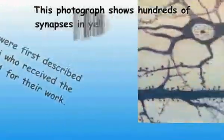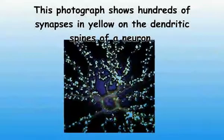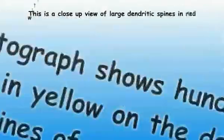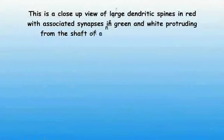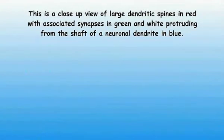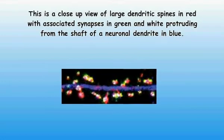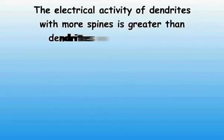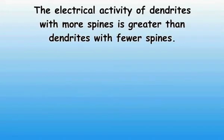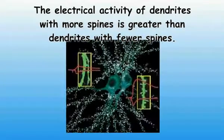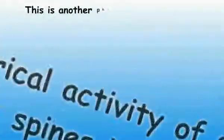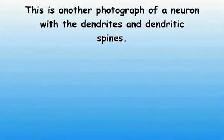Dendritic spines were first described by Cajal and Golgi, who received the Nobel Prize in 1901 for their work. This photograph shows hundreds of synapses in yellow on the dendritic spines of a neuron. This is a close-up view of large dendritic spines in red with associated synapses in green and white protruding from the shaft of a neuronal dendrite in blue. The electrical activity of dendrites with more spines is greater than dendrites with fewer spines.